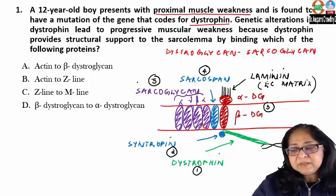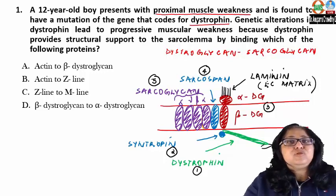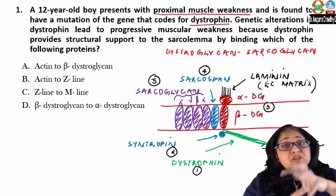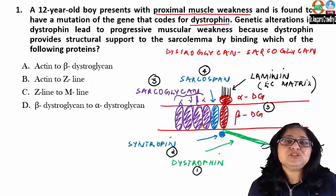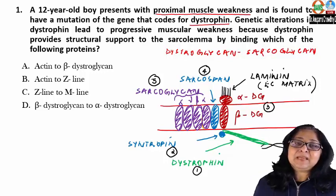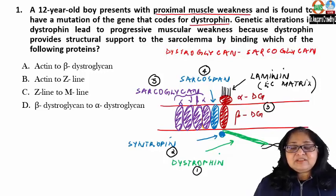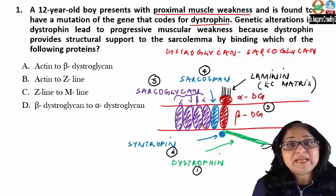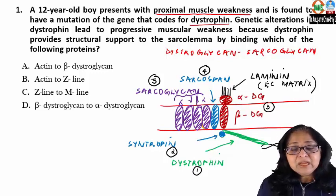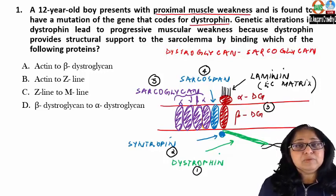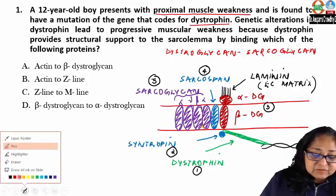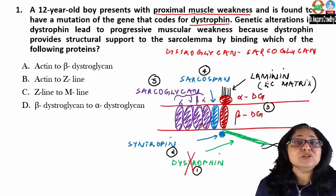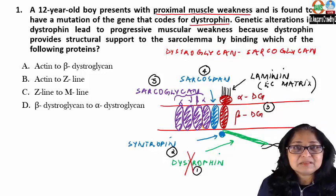These sarcolemma proteins are not contractile proteins. They are believed to be involved in amplification of the force generated by actin-myosin. Whenever there is a mutation of any one of these proteins, it results in muscle weakness. The commonest congenital problem is when dystrophin is absent, giving rise to severe proximal muscle weakness — Duchenne's muscular dystrophy.